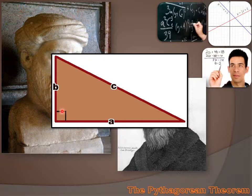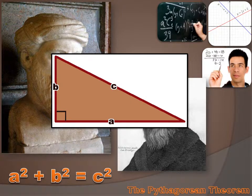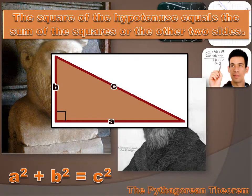Here's a nice right triangle. We can tell that because we put a little square in the corner, meaning that this angle is a 90-degree angle. Opposite that right angle is side C in this triangle, and that's always known as the hypotenuse. The hypotenuse is the side opposite the right angle. Now what Pythagoras told us was that the length of side A squared plus the length of side B squared equals the length of side C squared. Another way to say that is: the square of the hypotenuse equals the sum of the squares of the other two sides.